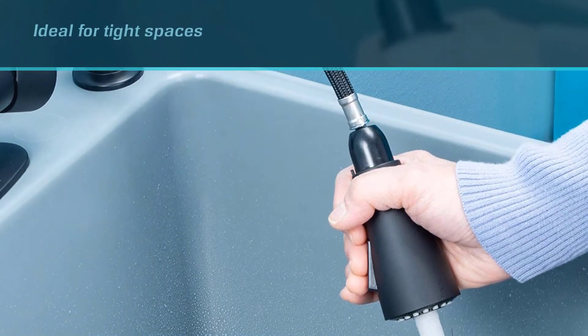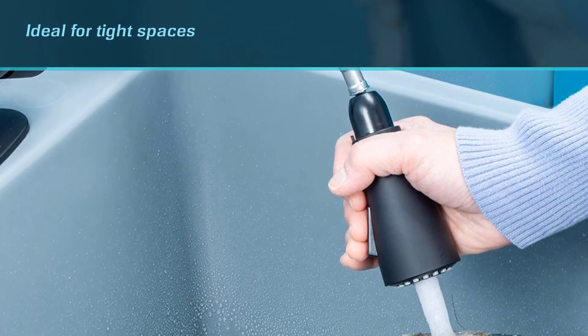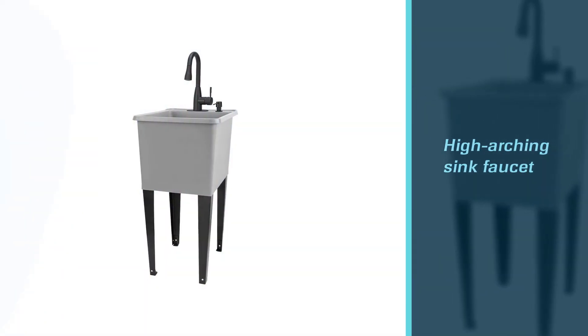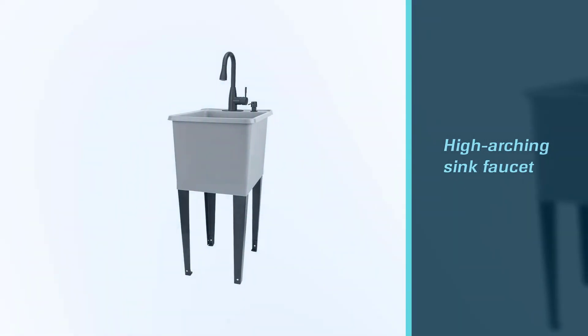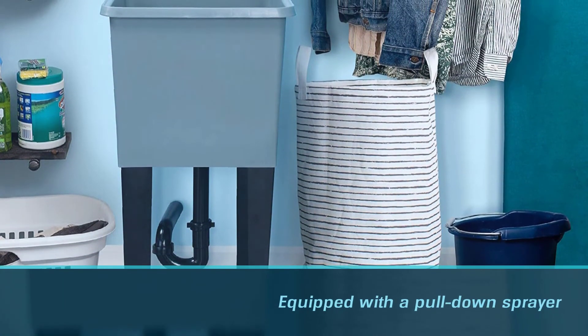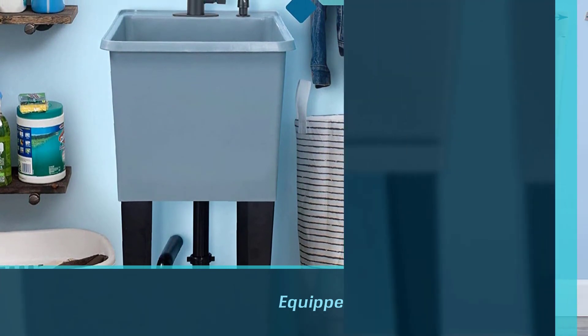The deep basin coupled with a high-arching sink faucet can help when washing larger objects or filling tall buckets. It also comes equipped with a fold-down sprayer capable of extending to the sink bottom for washing smaller items. Four sturdy metal legs with levelers provide ample support for the sink.